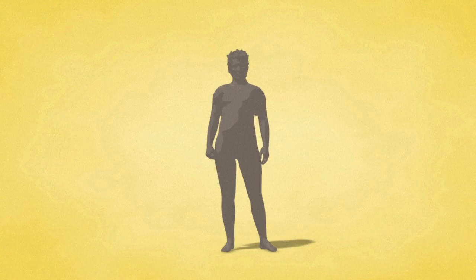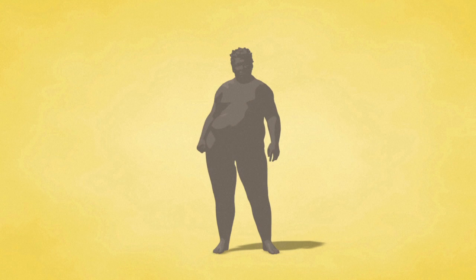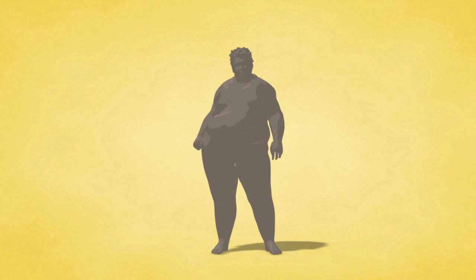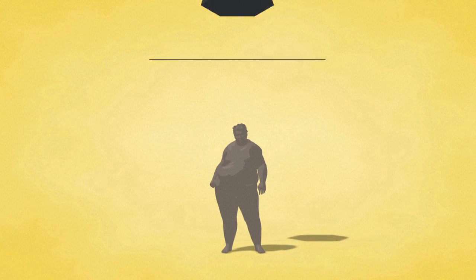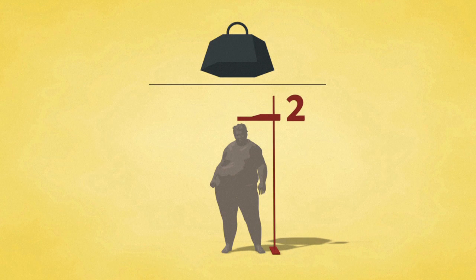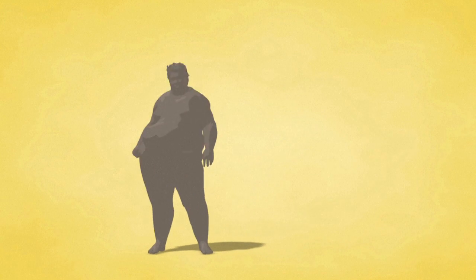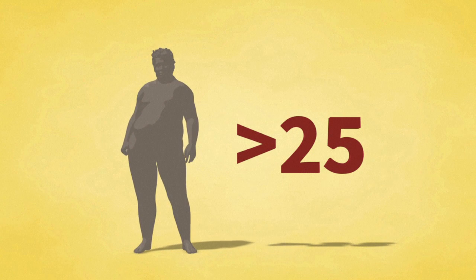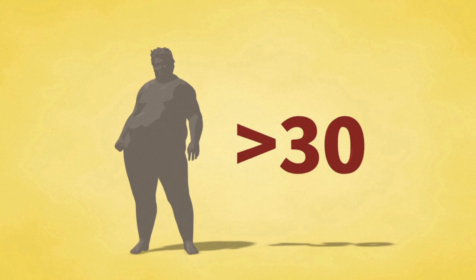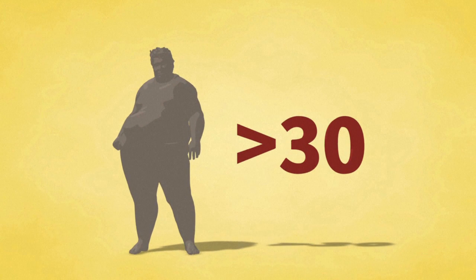Obesity is defined as abnormal or excessive fat accumulation that may impair health. It is measured using the Body Mass Index, which is your weight in kilograms divided by squared height in meters. Anyone with a BMI of 25 or above is classified as overweight. Those with 30 or above are classified as obese.